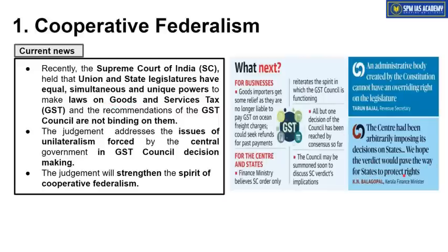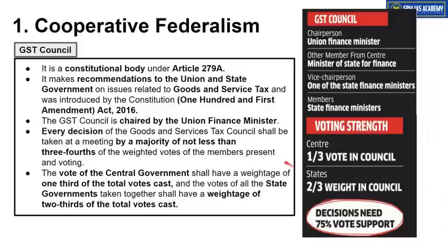Kerala's Finance Minister stated that the center has been arbitrarily imposing its decisions on the state. About two years ago, I had covered an article about GST compensation stress — during COVID pandemic lockdowns, indirect tax revenue declined drastically. There is a GST compensation provision that if there is any decline in overall indirect tax collection for state governments, the central government will compensate. However, during the pandemic year, the central government refused to give compensation by claiming the pandemic is an act of God, leading to widespread criticism from state governments.